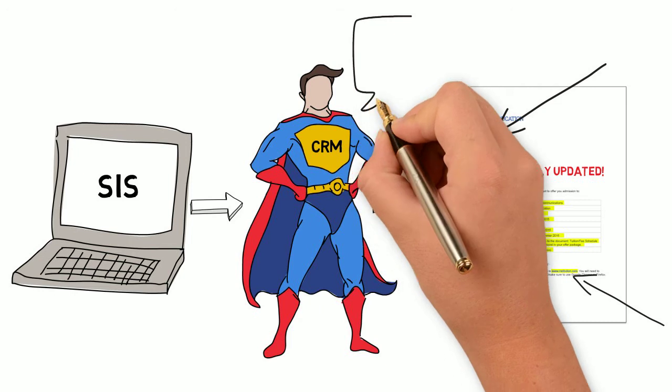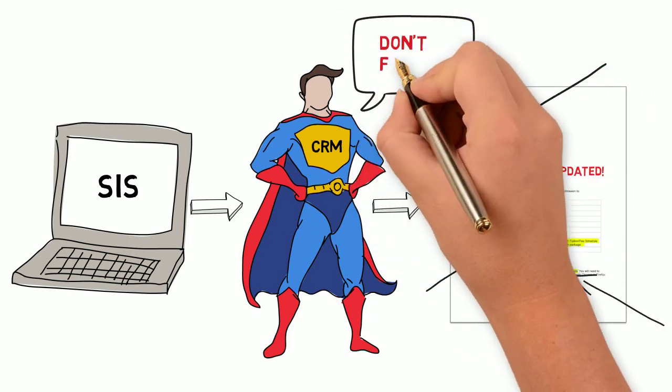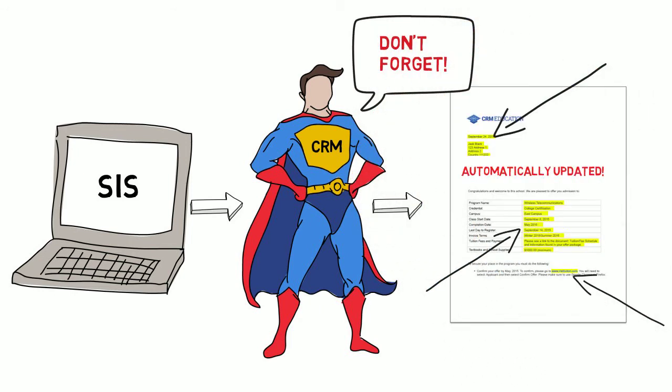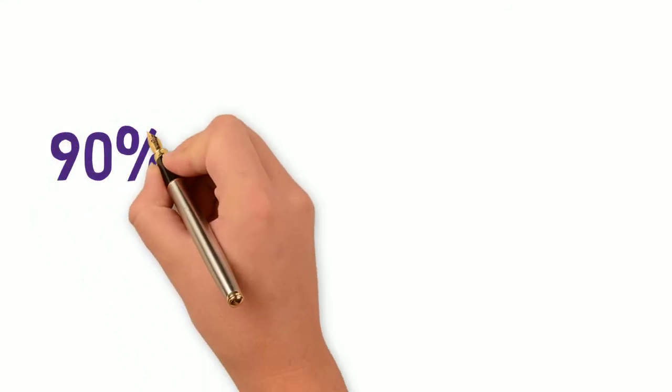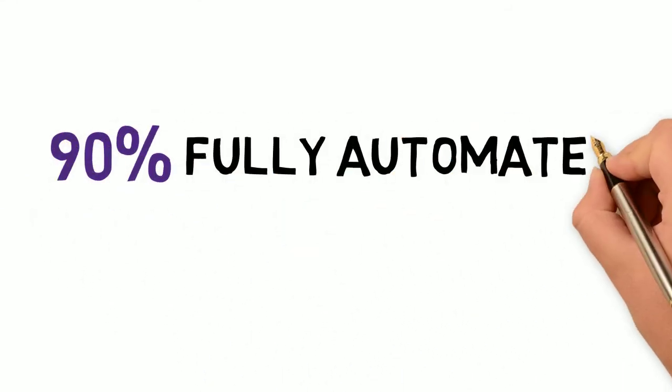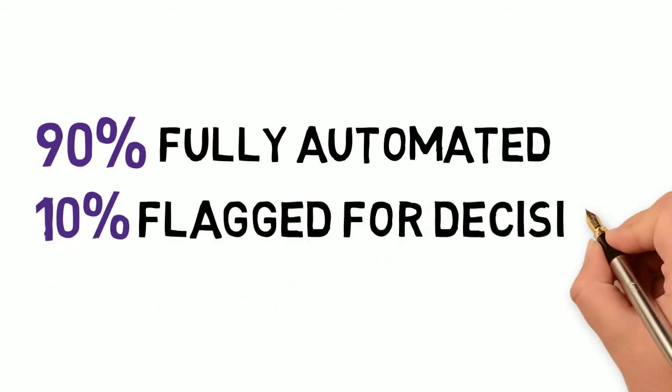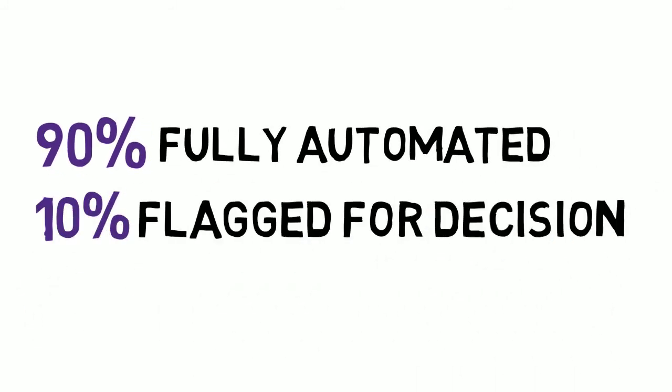Plus, CRM can follow up with a series of reminder letters as critical dates approach. Again, it's all automatic. In fact, about 90% of all responses to student applications can be fully automated. CRM will flag the other 10% which require verification or a decision by you.